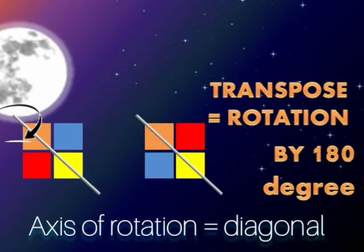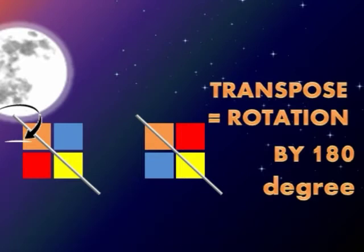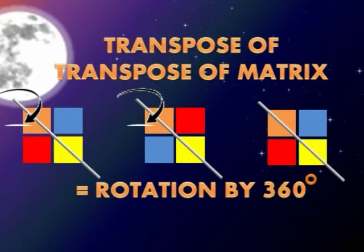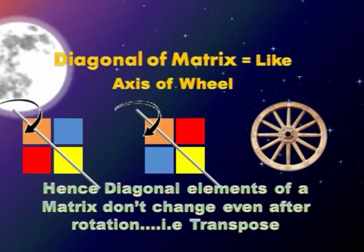The transpose of a matrix is the entire matrix rotated by an angle of 180 degrees around the diagonal as the axis of rotation. The transpose of the transpose of a matrix is the transpose taken twice, so it's a rotation of 180 degrees done twice—a total rotation of 360 degrees around the diagonal as axis.